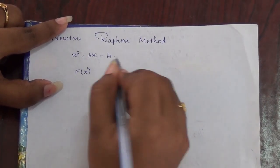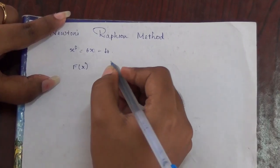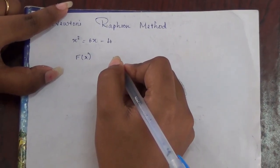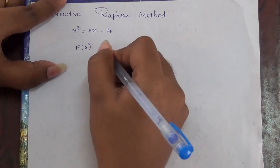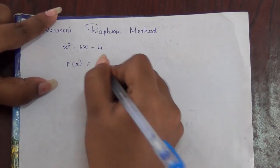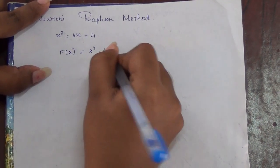Now we are going to see an example for Newton-Raphson method. The question is to find the root of x³ = 6x - 4. So we take this equation as f(x) = x³ - 6x + 4.